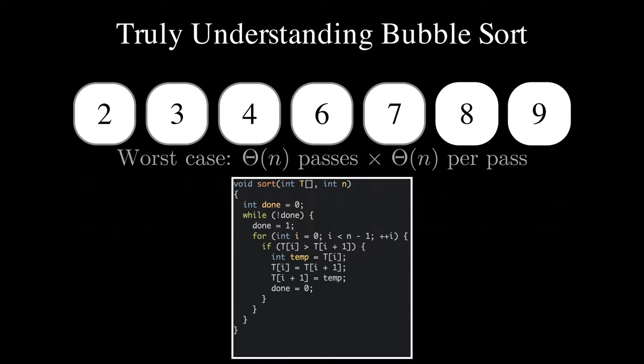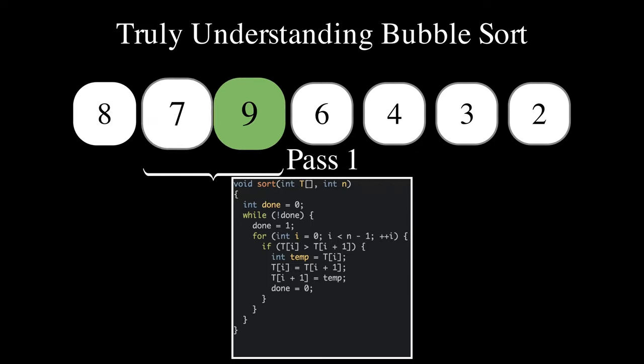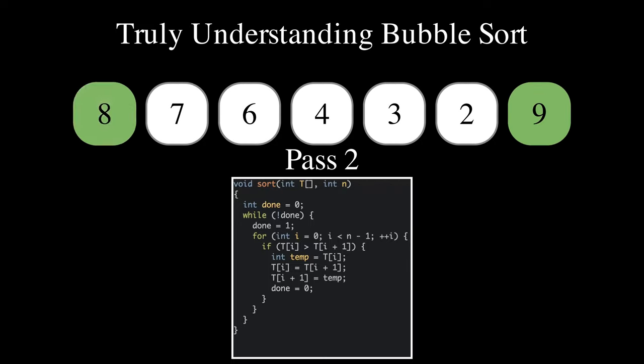However, in the worst case, the number of passes can be as large as theta of n. This happens, for example, when the array is sorted in reverse order. In this case, each pass brings the next largest element to its final position.